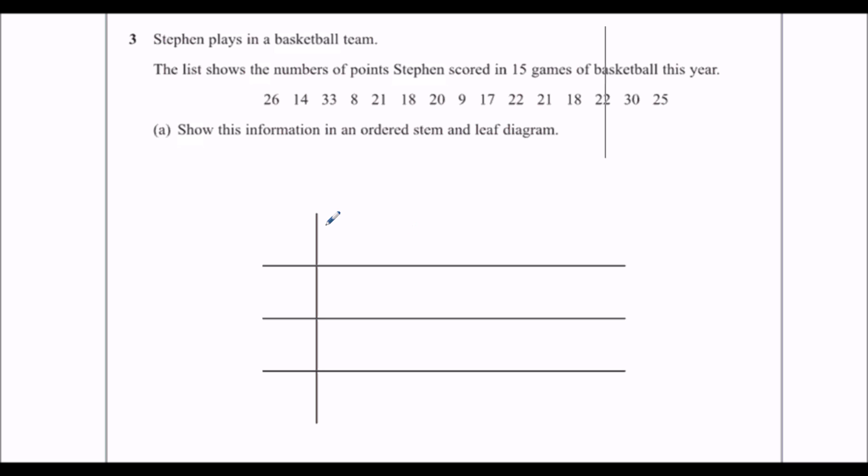So on a stem and leaf diagram, the tens go down here and the units go in here. They go in order, so the lowest tens, well zero, no tens, and then one, two, and three.